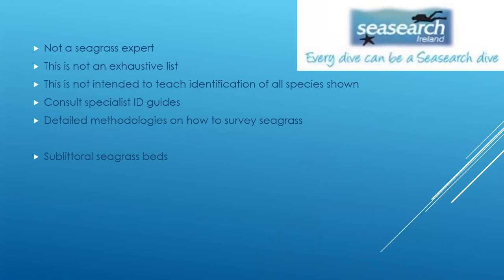Some caveats: we did one on kelp and watching the recording back, I'm not entirely happy with how it came across. I'm not a seagrass expert, I don't pretend to be. This is not an exhaustive list of species you would find in seagrass habitats, and it's not intended to teach identification of all the species shown. There's an awful lot of confusion species, and there just isn't time to go through the minutiae you need to identify all these species. It's more just a general guide of the sort of species you'd expect to see in seagrass, with some direction on how to find these by consulting a specialist ID guide.